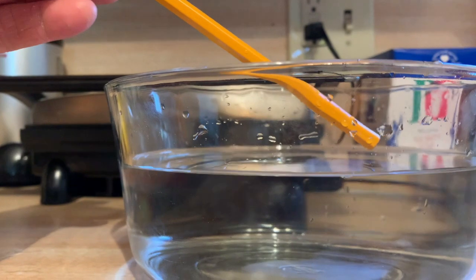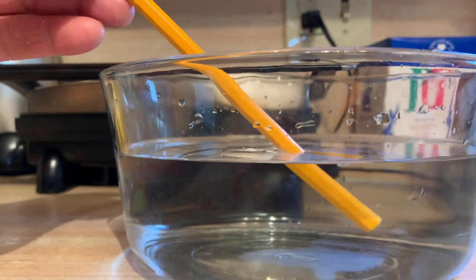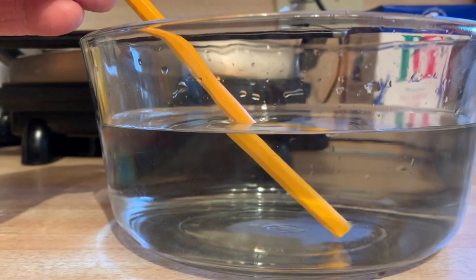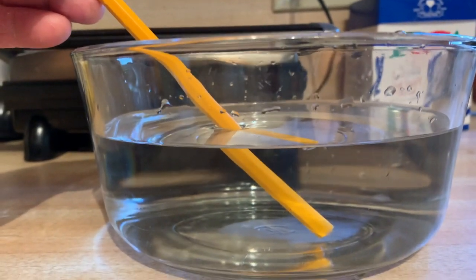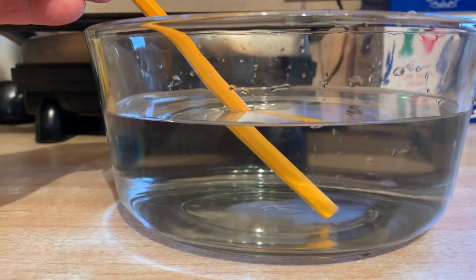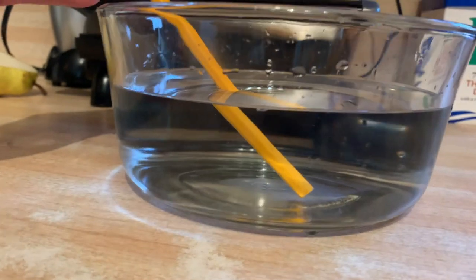But when I submerge part of it in the water, some of the light waves refract differently and they bounce back differently, making it appear deformed or bent.